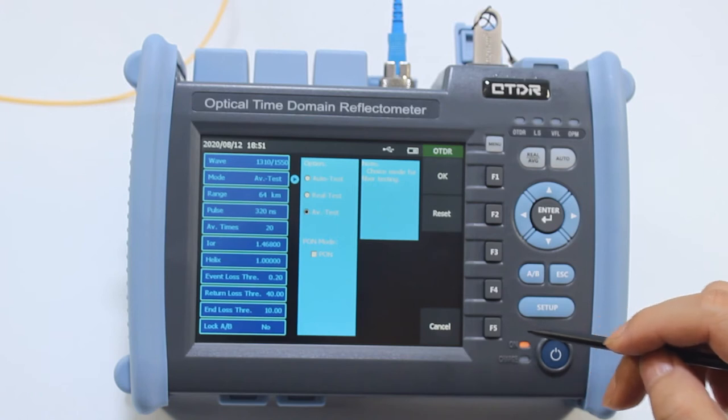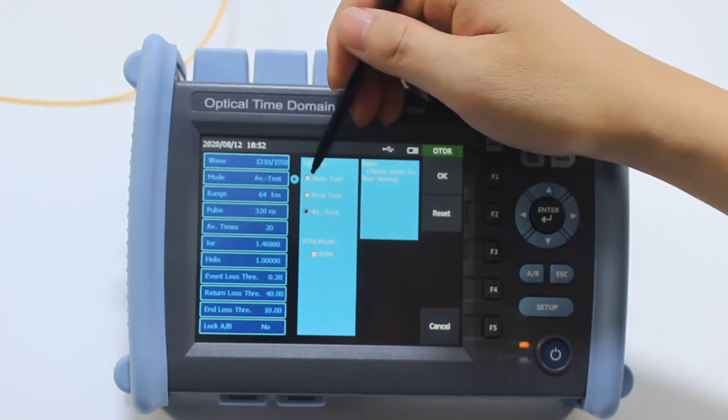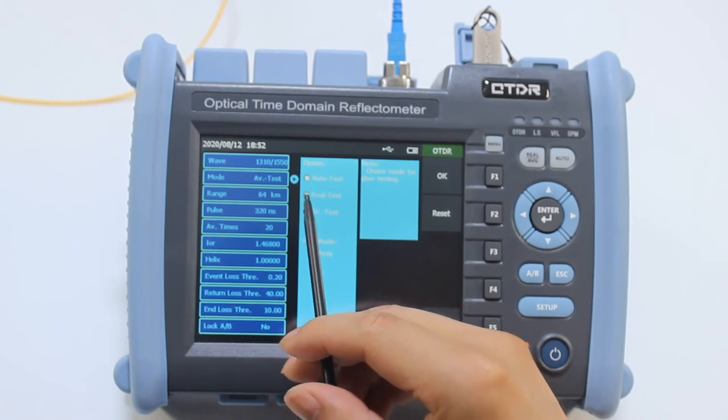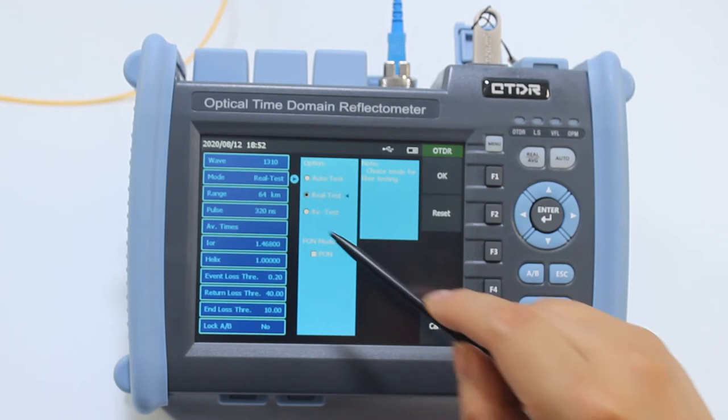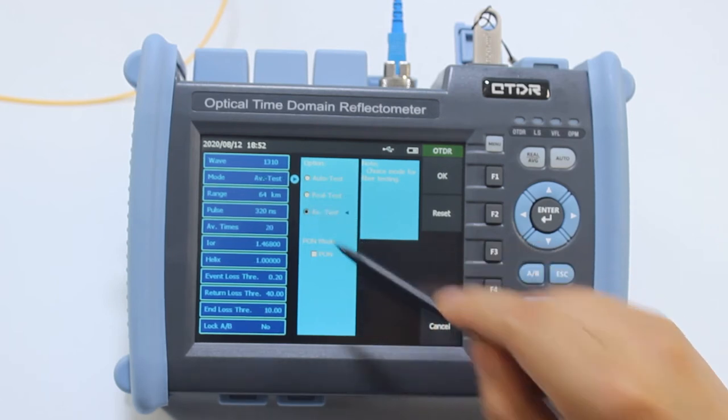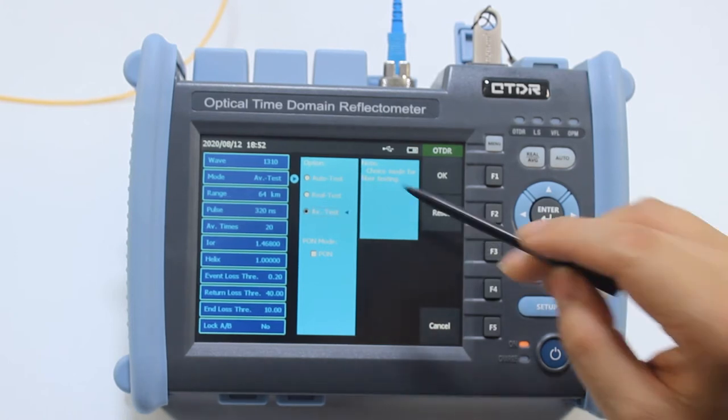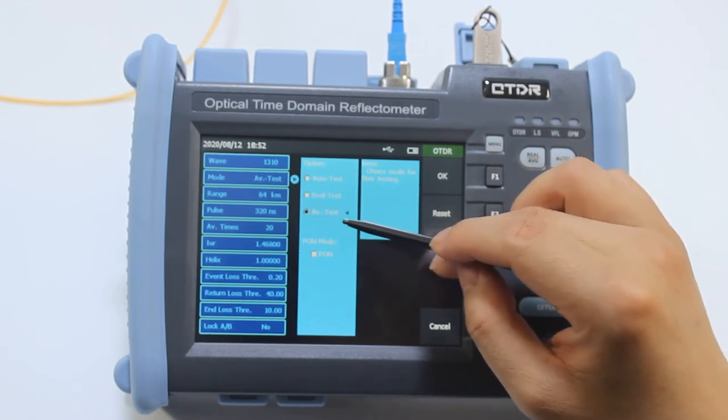For new engineers who do not have any idea on OTDR testing, you can select Auto test. Real test is to dynamically monitor fiber link. Average test is for experienced engineers. To improve the testing quality, you can select Average test.